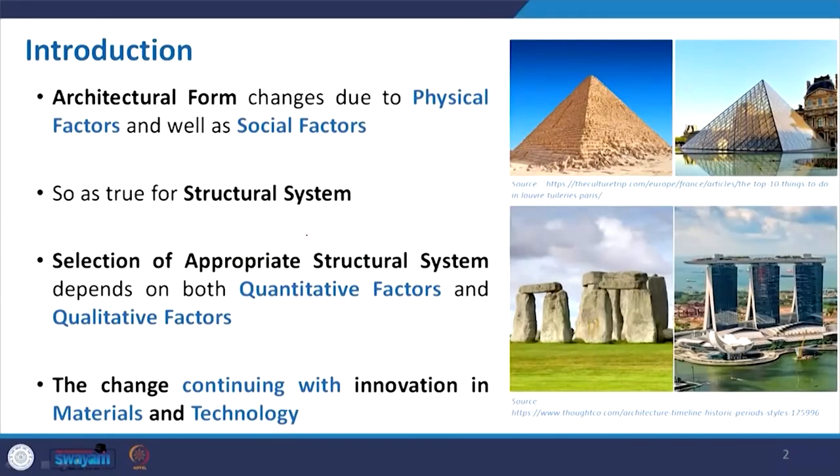Physical factors as well as social factors influence the architectural form and the structural system, because we cannot make much difference between these two. Whenever something was conceived in the mind and brought into reality, the structural design was made with available resources, and that transformed over time.